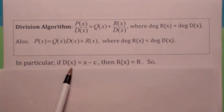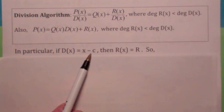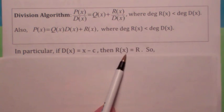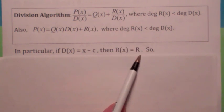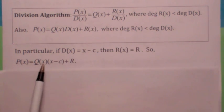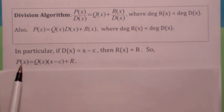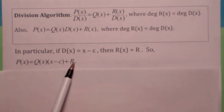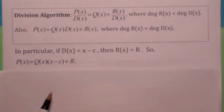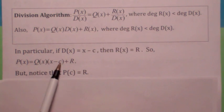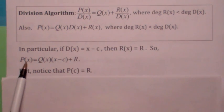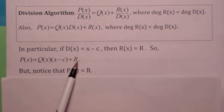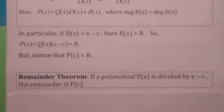In particular, what if the divisor is a linear factor, x minus c? Then since the degree of the remainder has to be less than a linear factor, the remainder has to be a constant — r of x would just be a zero degree, or constant, value. So the division algorithm says: when you divide a polynomial by a linear factor, you get a quotient polynomial plus a constant remainder. What does p of c equal? Plugging in c makes the quotient term equal to zero, so p of c is just r. And that is exactly what the remainder theorem says.